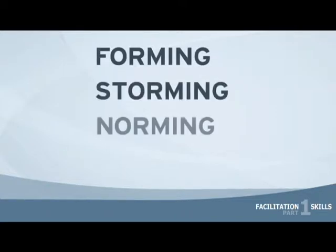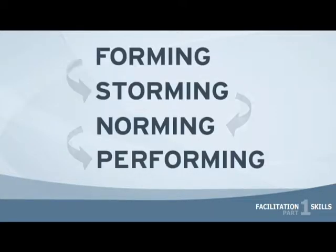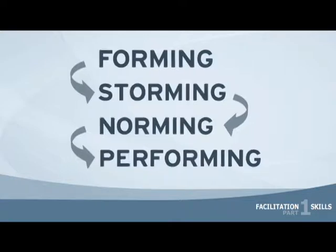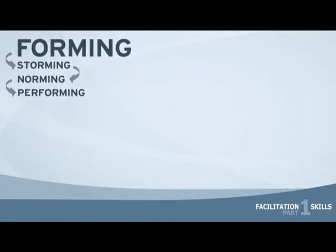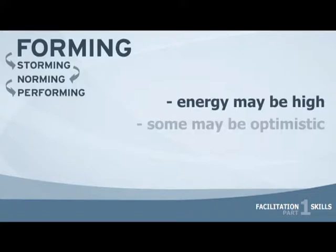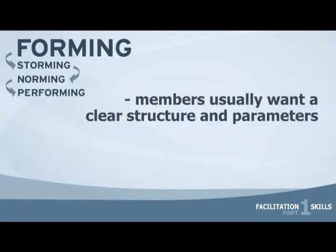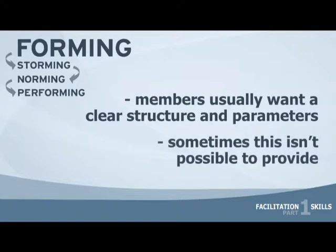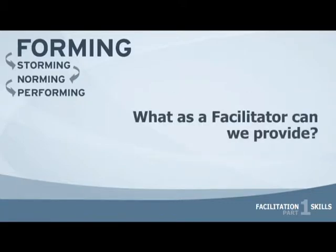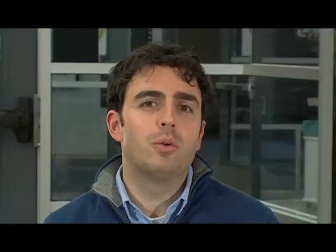The four stages in group development are forming, storming, norming, and performing. In the forming stage, there are several characteristics that can emerge. Energy may be high, some may be optimistic, while others may have a lot of anxiety. Members usually want a clear structure and parameters, though sometimes this isn't possible to provide. As a facilitator, we can provide ground rules and protocols that allow good work to emerge.